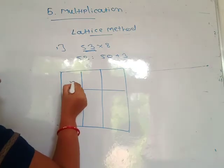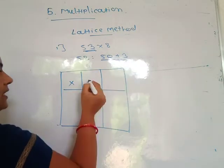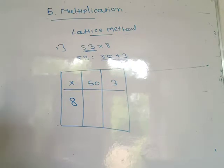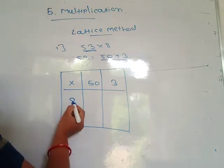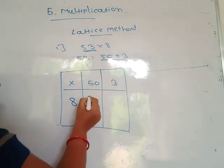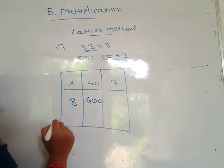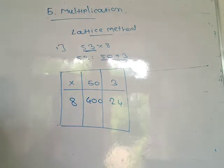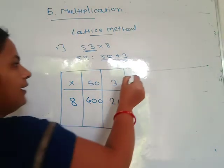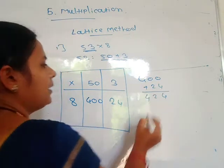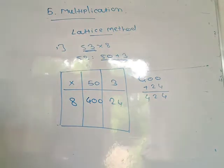You write the one-digit number 8 here, then write the multiplication. Write the expanded form of 53: 50 plus 3, and write 8 here. Then do the multiplication. Firstly, 8 into 50 — 8 fives are 40, and this means 400. Then 8 into 3 — 8 threes are 24. Then you do the addition of these two numbers: 400 plus 24.